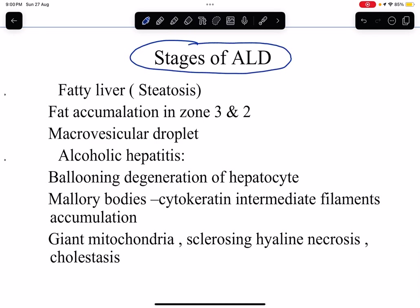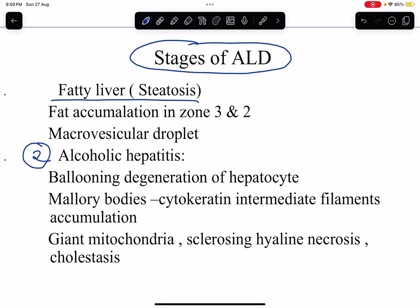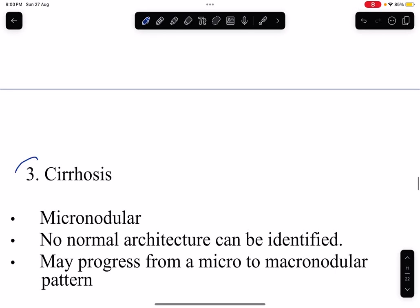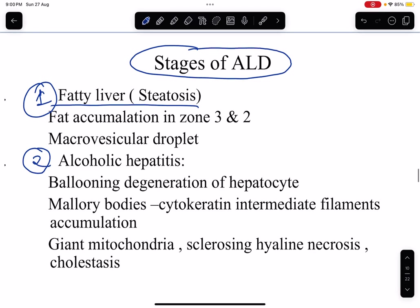Alcoholic liver disease runs through mainly three stages. The first stage is fatty liver or hepatic steatosis — alcohol-related steatosis. There is fat accumulation in zones 3 and 2, with macrovesicular droplets — large droplets of fat inside the liver.